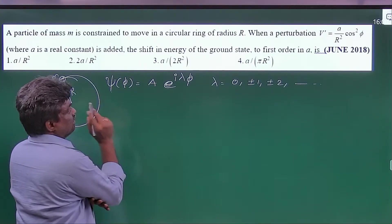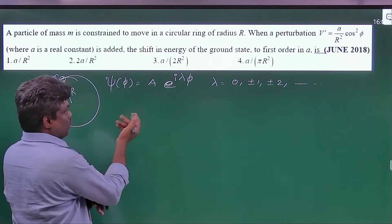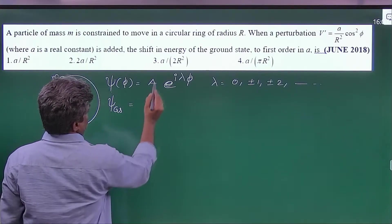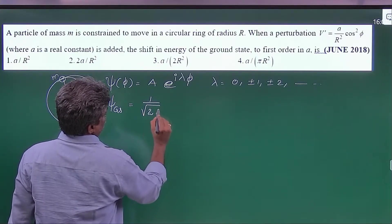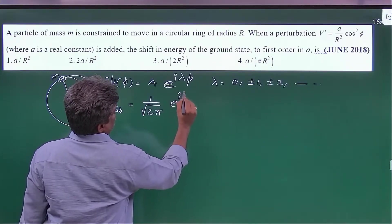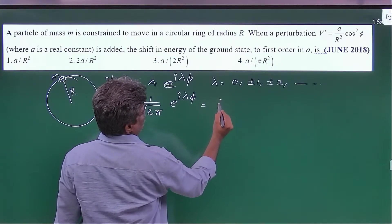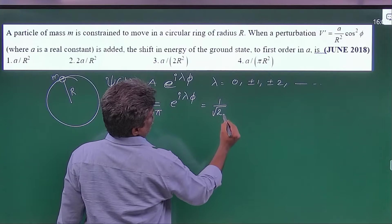Here they are asking for the shift in energy of the ground state. So I'm taking the ground state. That is, the normalization constant is 1 over root 2 pi, e raise to i lambda phi, and for ground state lambda is 0. That's why it is 1 over root 2 pi.